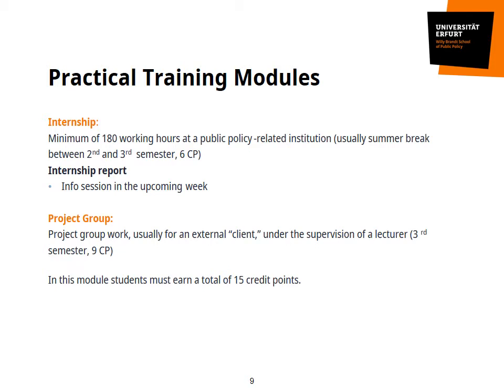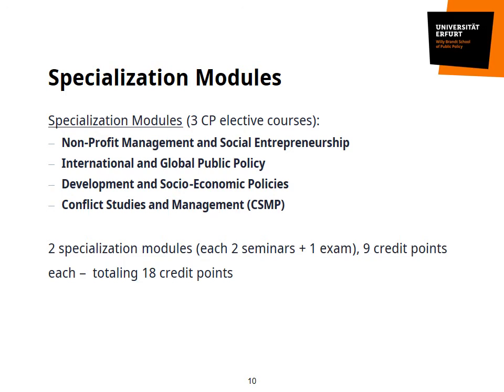While so far we have dealt with compulsory modules, you only need to complete two of the four specialization modules. The four specializations are called Nonprofit Management and Social Entrepreneurship, International and Global Public Policy, Development and Socioeconomic Policies, and Conflict Studies and Management. In each of the two specializations you will be taking, you will do two seminars and one module examination. That examination — which may be a paper, an oral exam, or a combination of both — will be connected to one of the two seminars you are taking. We will have an extra session on the specializations next Monday, where the relevant professors or some of the academic staff will briefly introduce each of the specializations. We will do this as a Webex session.